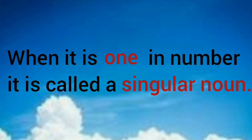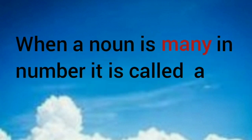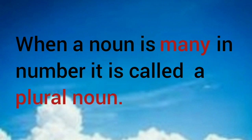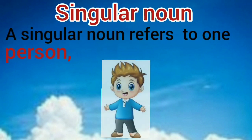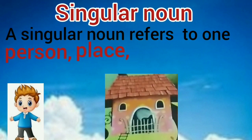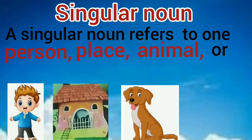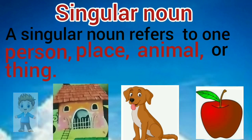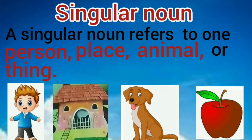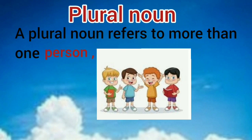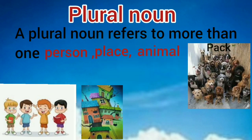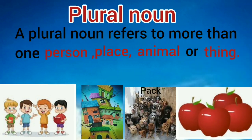When it is one in number, it is called a singular noun. When a noun is many in number, it is called a plural noun. A singular noun refers to one person, place, animal or thing. A plural noun refers to more than one person, place, animal or thing.